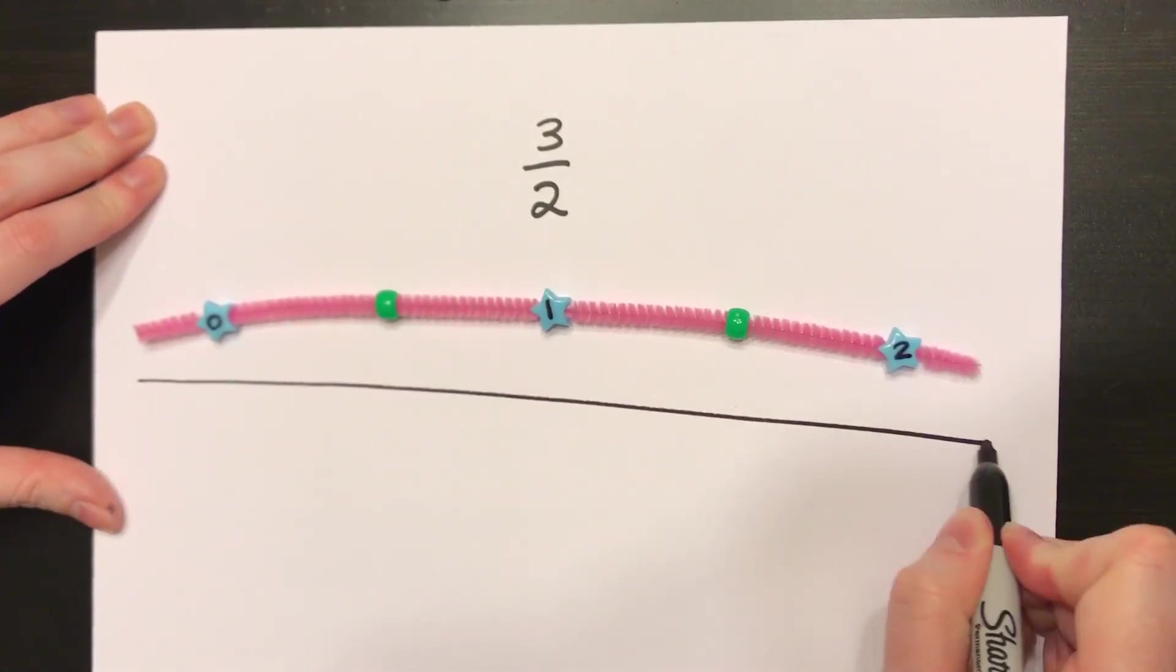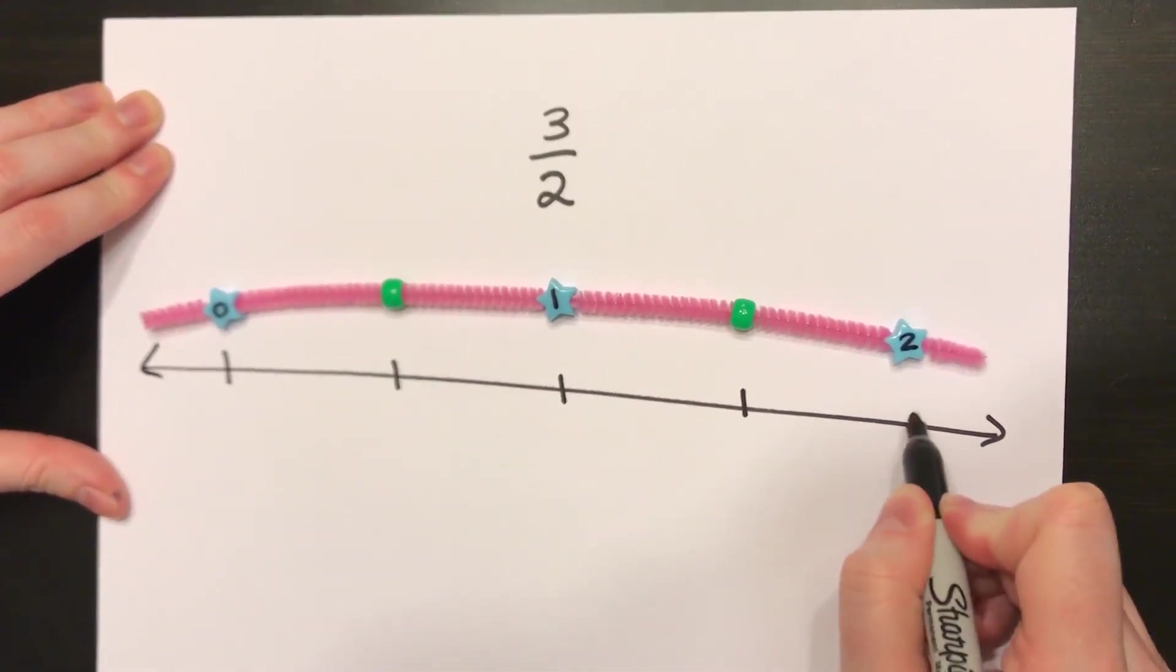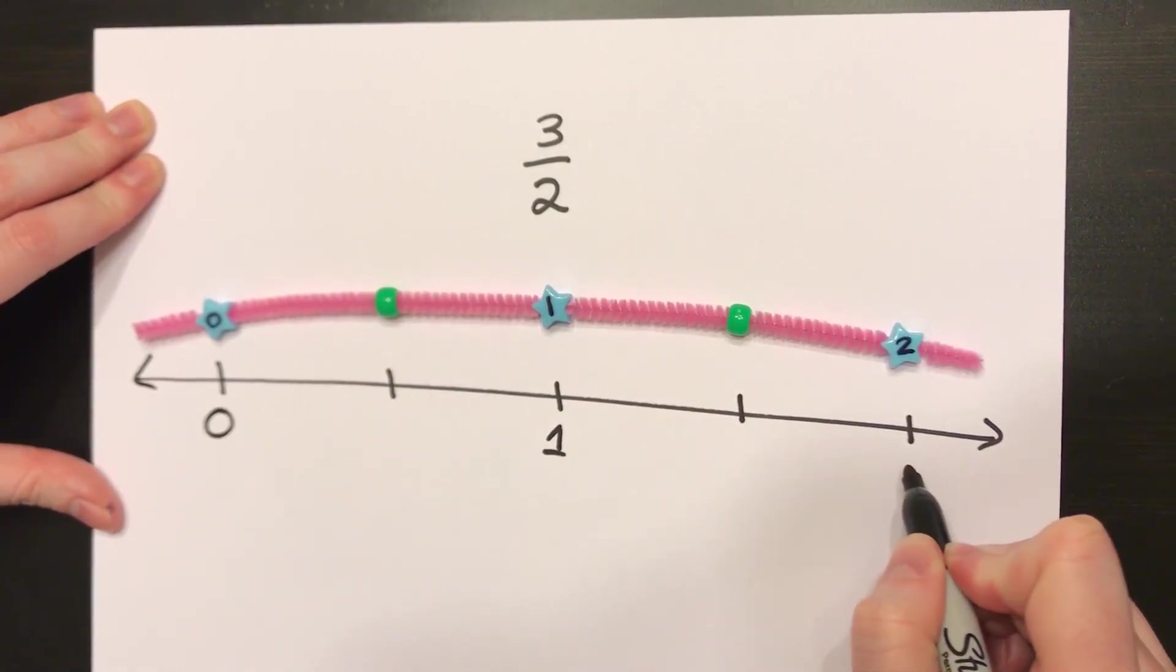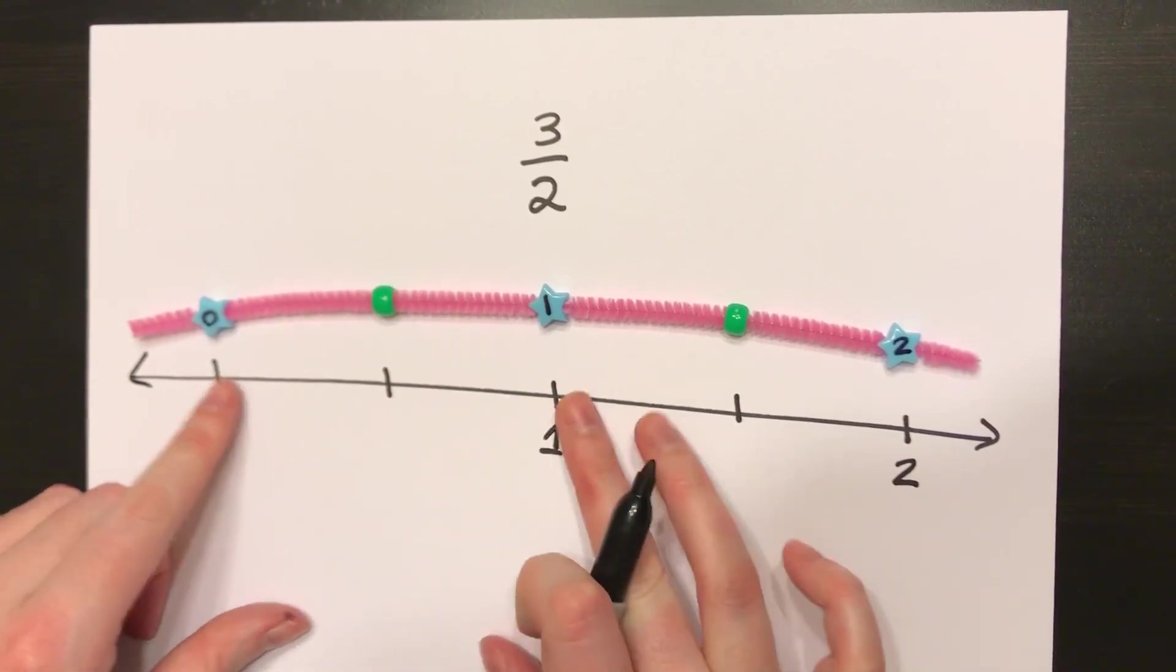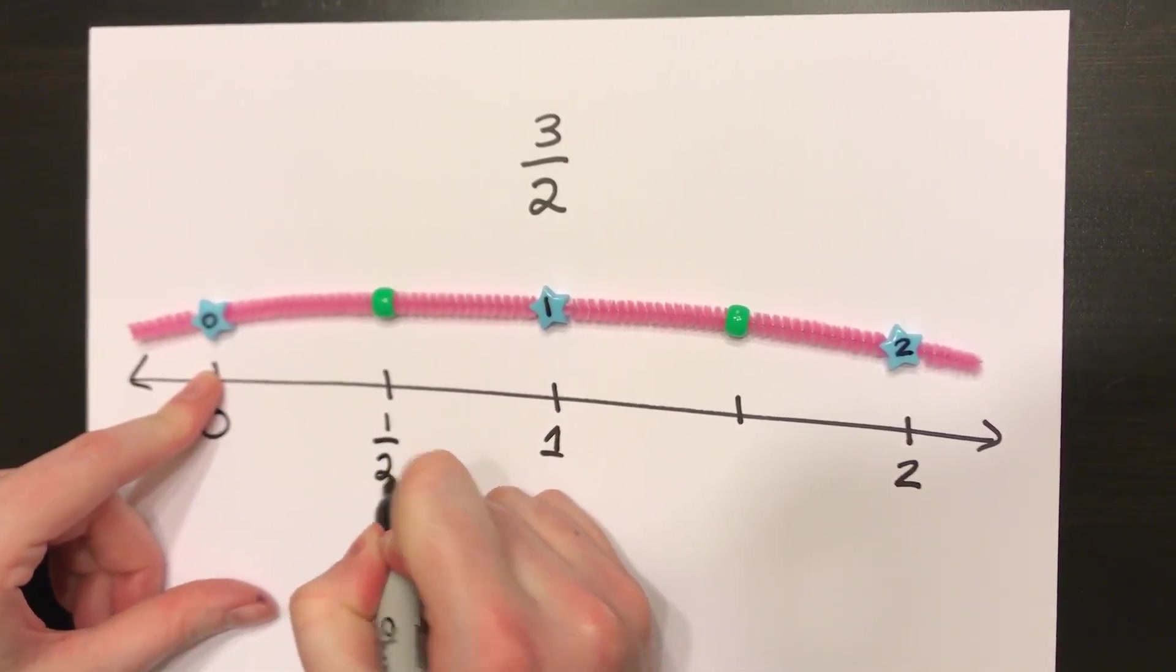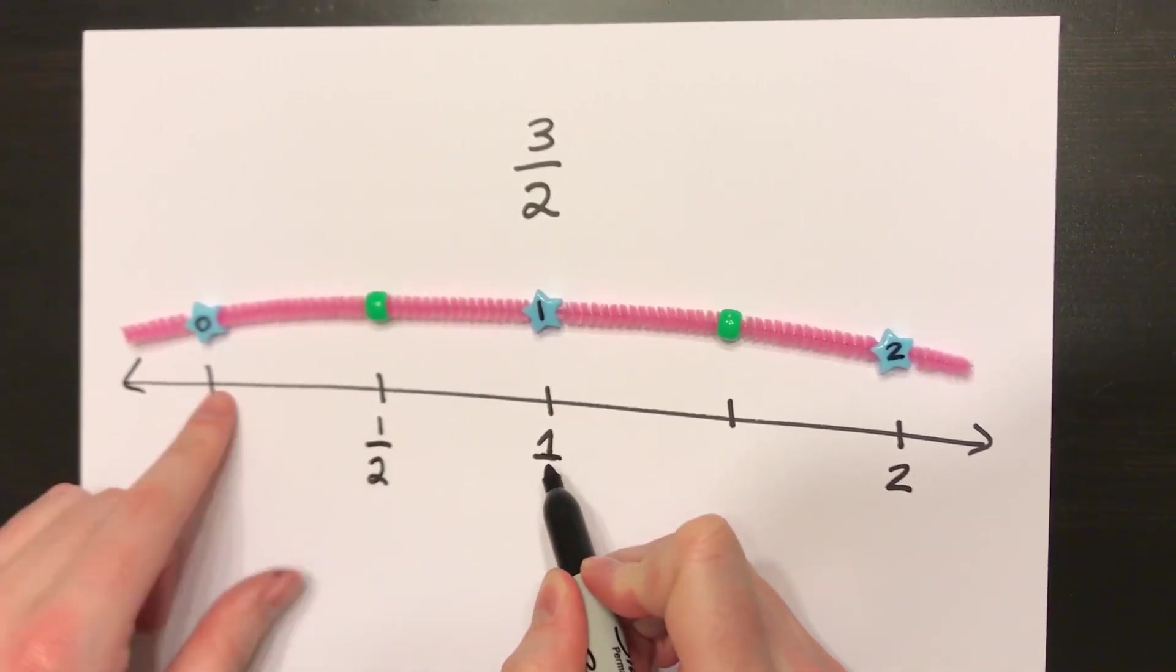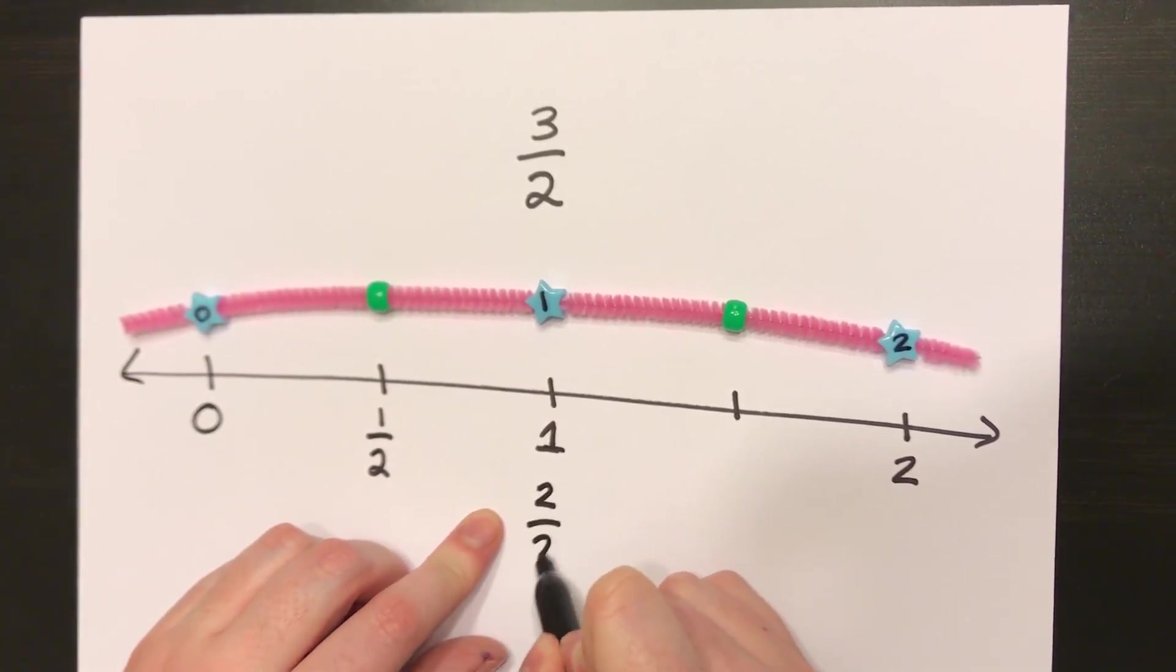So let me draw my number line. Putting a tick mark at each bead, labeling my wholes. Now between 0 and 1, if I'm looking at two equal parts, the first part would be 1 half. I could also label the number 1 as being the second out of two parts, or two halves.